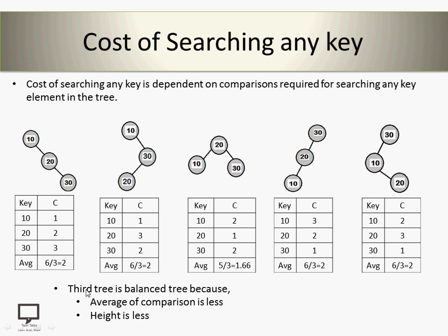The third tree is a balanced tree because its average comparison cost is less and its height is also less. Because of both reasons, tree number 3 is the most balanced tree. But this is not our requirement — our requirement is to find out the optimal binary search tree. Here I have used only the cost of searching the numbers. If we include frequencies — how many times we are going to search any particular element — that will be helpful to find out the optimal binary search tree.